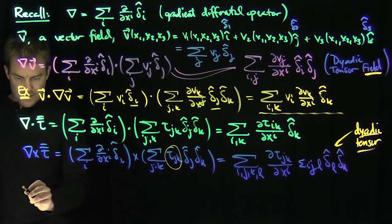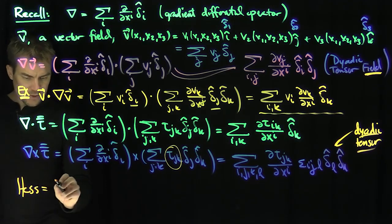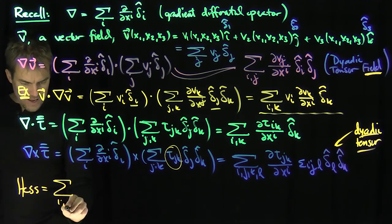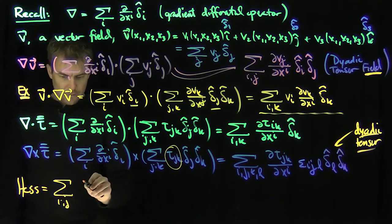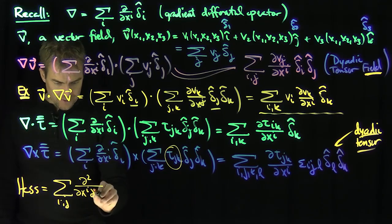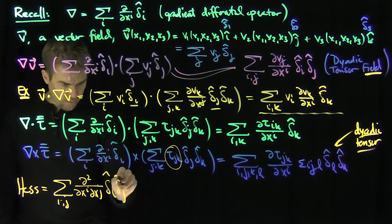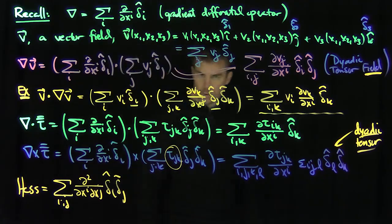Now one last thing I want to mention is the idea of a Hessian. The Hessian is the sum over i and j of partial squared, the second derivative operator. We're going to study these second derivative operators carefully in further videos because they don't transform in the way we want them to. They don't transform in a tensorial way.